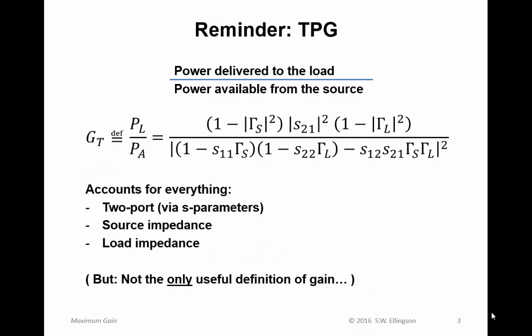TPG is defined as the power delivered to the load relative to the power available from the source. In other words, the power dissipated in the load relative to the power that the source could dissipate into a conjugate matched load attached to the source only. We also worked out an expression that gives us the TPG if we know the S-parameters and the source and load impedances. As usual, the source impedance is represented by a source reflection coefficient, and the load impedance is represented by a load reflection coefficient. This accounts for everything: the two-port via the S-parameters, the source impedance, and the load impedance.